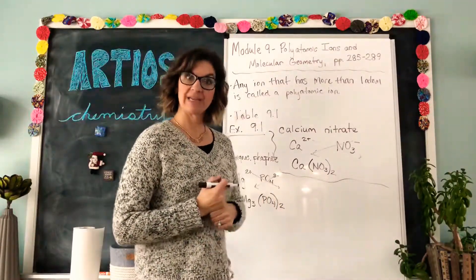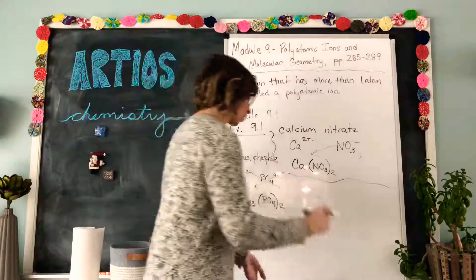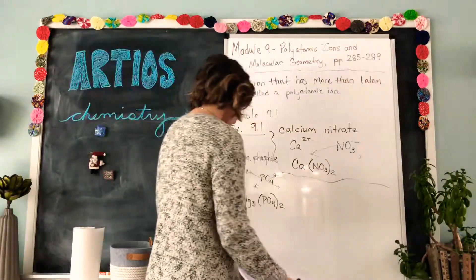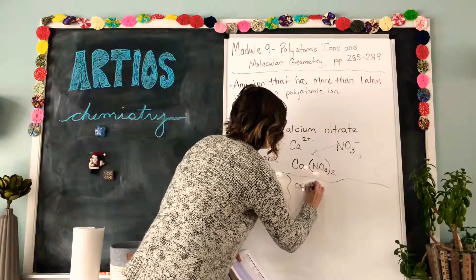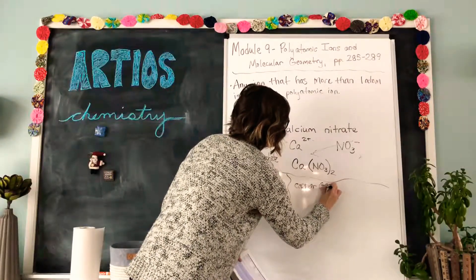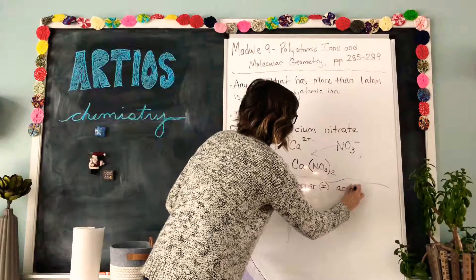So that would be the chemical formula for magnesium phosphate. And we've got one more in our example, copper I acetate. Copper I is the Roman numeral acetate.